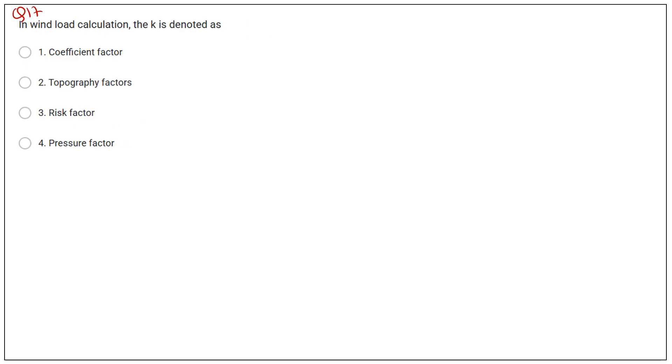Then question number 17. The wind load calculation, K denotes. So for the wind load calculation, the formula is Vz equals to Vd, K1, K2, K3. So here Vz is design wind speed. Vd is basic wind speed. K1 is nothing but a risk factor. K2 is a terrain factor. K3 is the topography factor. So here they ask about the K1. So for K1, risk factor is the correct option. The third option is correct here.